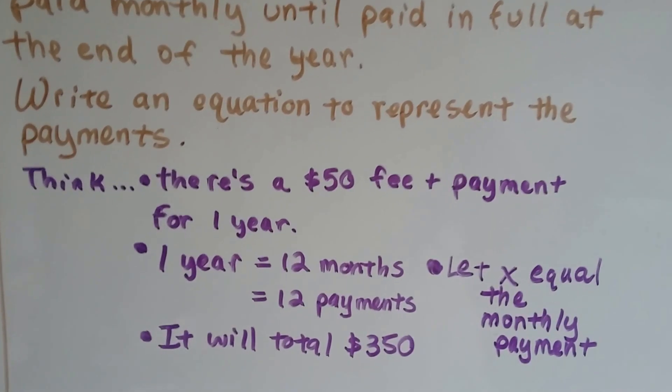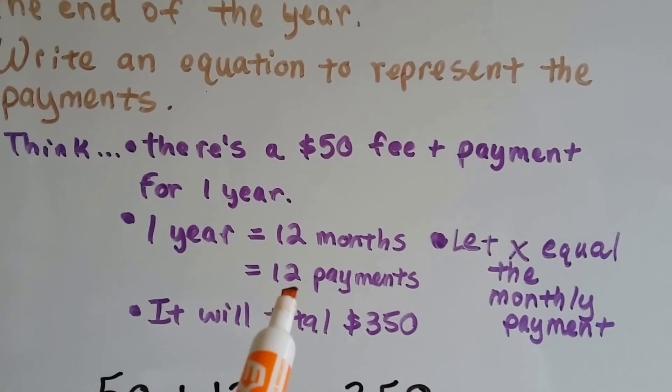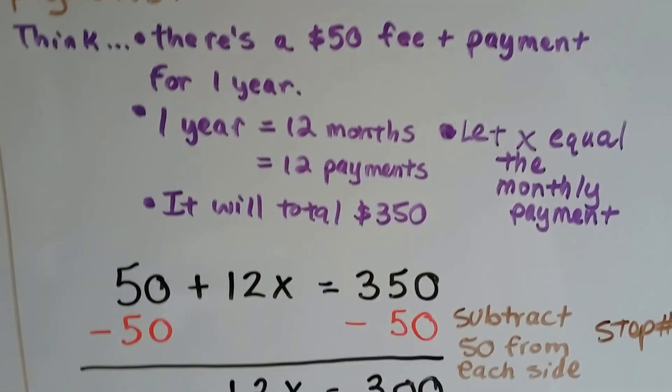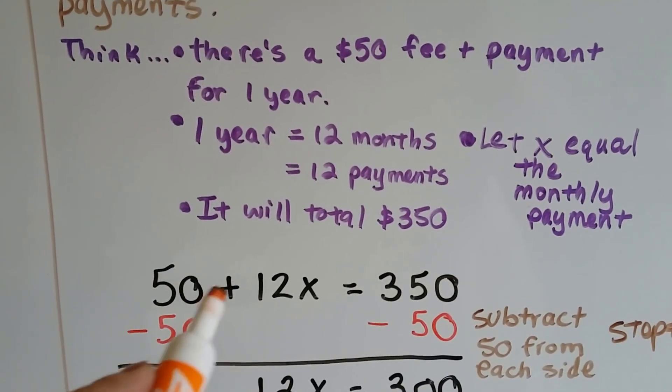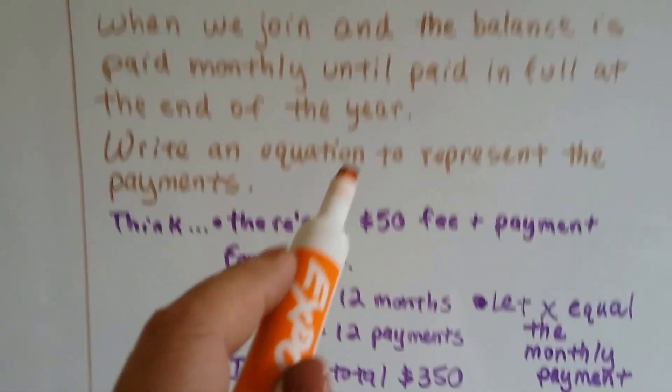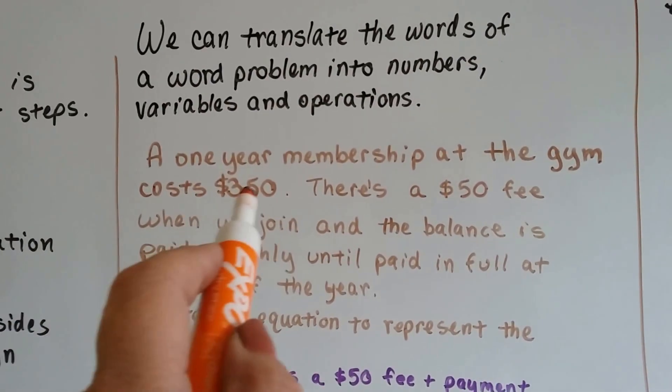1 year is 12 months, so if there's monthly payments, that's 12 payments. So we're going to let x equal the monthly payments, and we need 12 of them. So now we've got 50 plus 12x equals 350, because that was the total of the cost for the year.